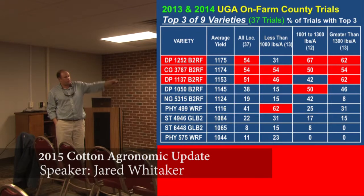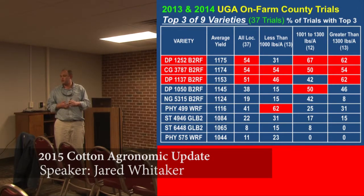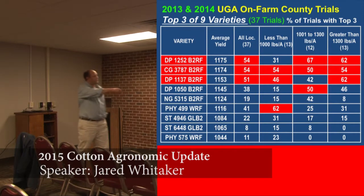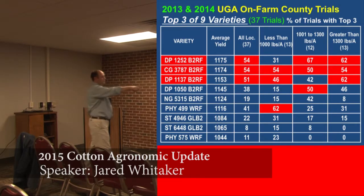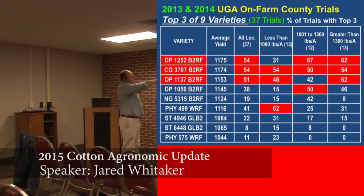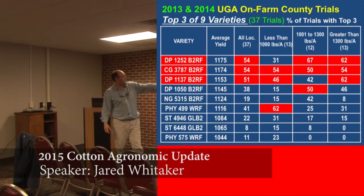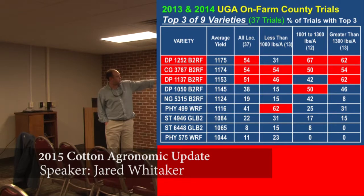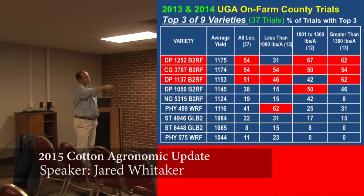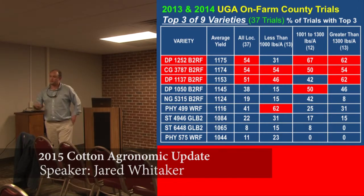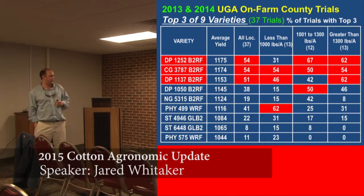Another way to look at the data when you have this many trials is examining where a variety fits — some are dryland varieties, some are irrigated, one's a racehorse, that kind of thing. When we have this many trials, we can look at how varieties perform in different yield environments. This column shows the 13 trials with average yields less than 1,000 pounds — kind of our dryland environments. The top three overall aren't necessarily the top three in that situation. We see that PHY 499 WRF is probably the most consistent variety when yields were less than 1,000 pounds. That's kind of how we're making suggestions on varieties and thinking about it.